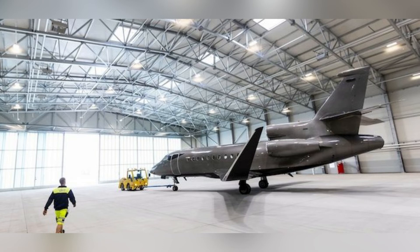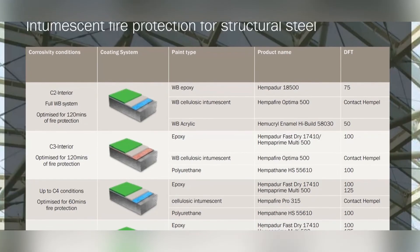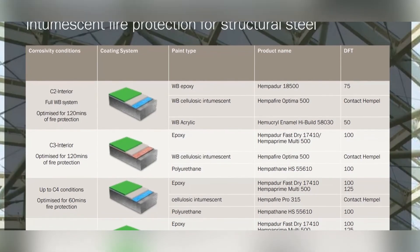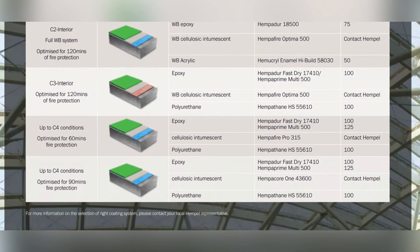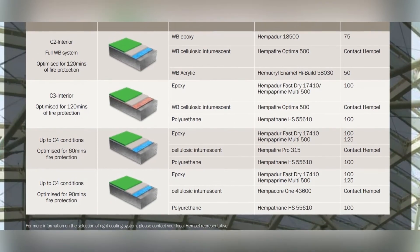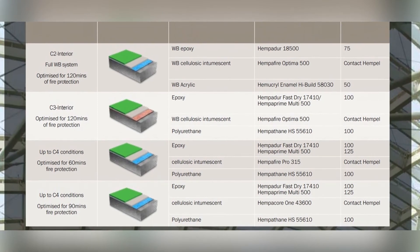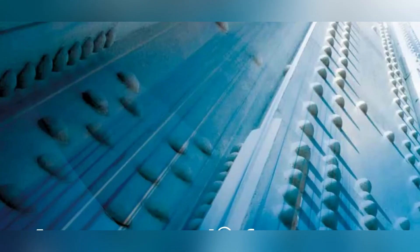Intumescent fire protection for steel structures is achieved with the help of Hempel Core coatings. Building contractors want to be assured of durable coatings that meet fire safety regulations, are easy to maintain, and give a smart long-lasting finish. By choosing the three-coat core systems, faster and more efficient application is also achieved.